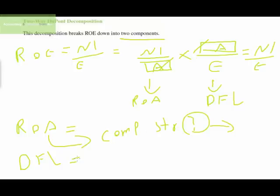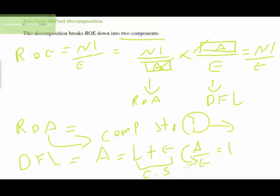As we know, assets equal liabilities plus equity — the capital structure. If assets divided by equity equals 1, all assets are financed by equity. If that ratio equals 1.2, then roughly 17% of assets are financed by liabilities. Let's see how that works mathematically.